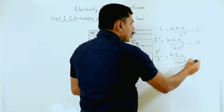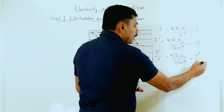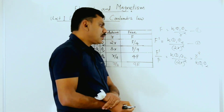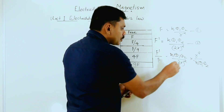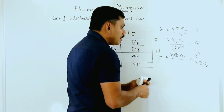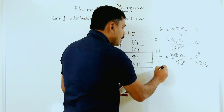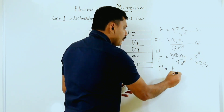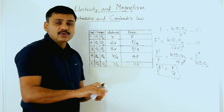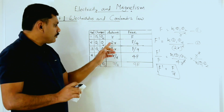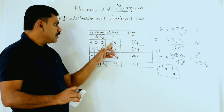F' divided by F equals k·q1·q2 divided by (2r)² multiplied by the reciprocal, which is r² divided by k·q1·q2. So k cancels, q1·q2 cancels, and (2r)² becomes 4r², then r² cancels. So F' equals F/4. The new force becomes one-fourth of the previous value.